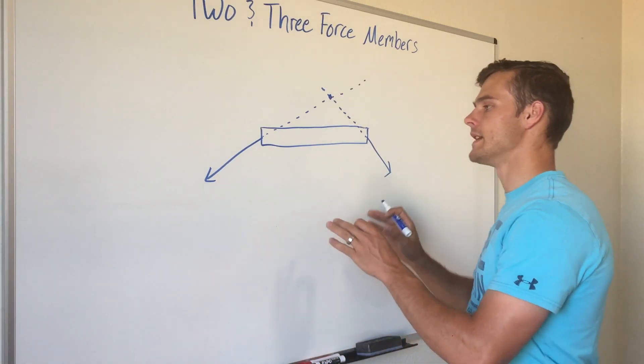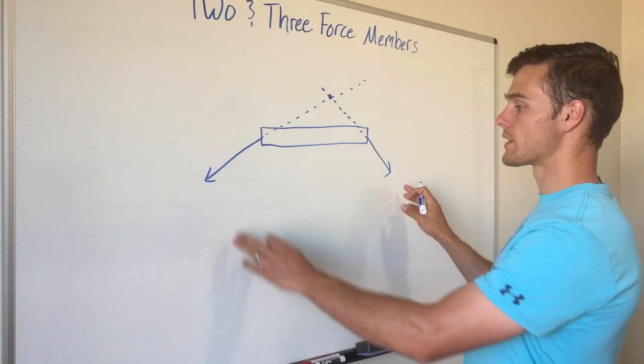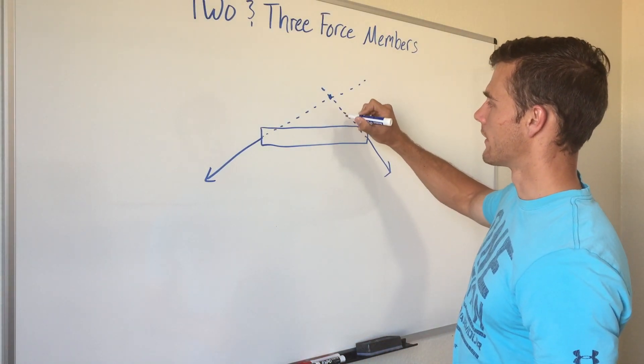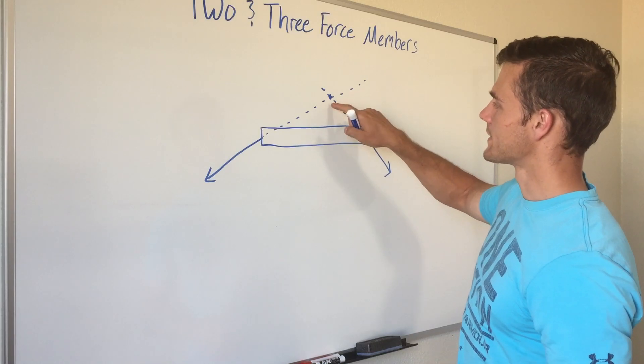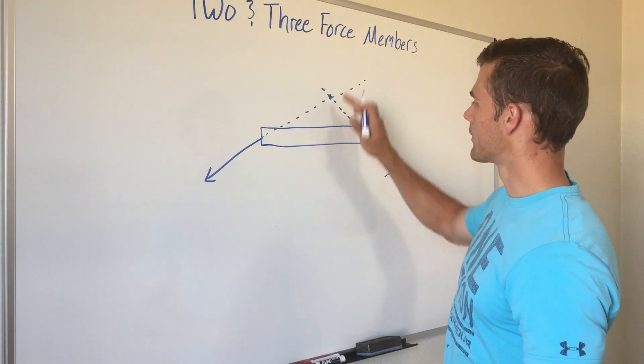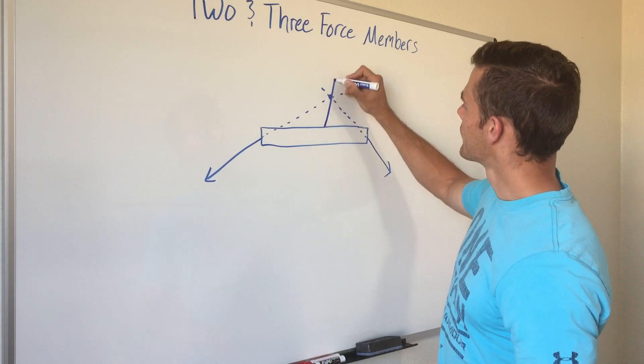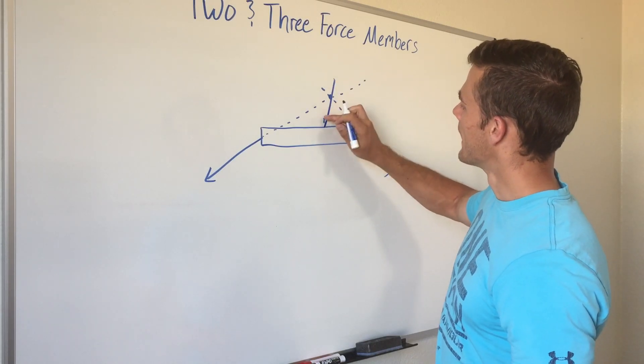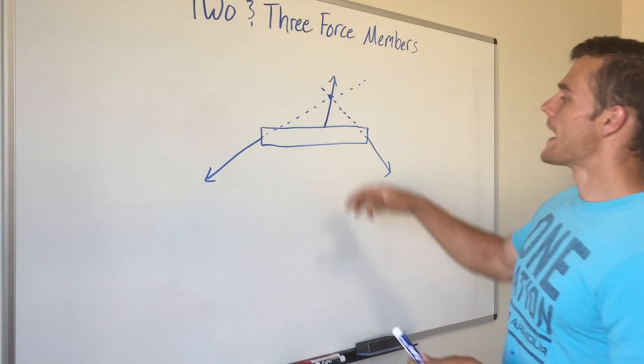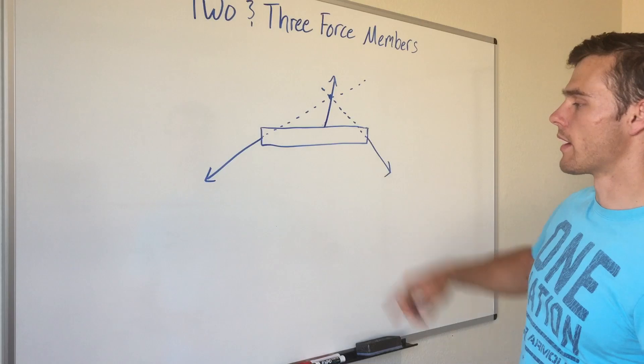Well, for it to be in equilibrium, the forces, for one, have to be the right magnitude, but it also has to be that the third point passes through this line, too. So whether that is going perpendicular to the beam or in another direction, and it's probably going to be going the opposite direction for it to be in equilibrium, but it has to be going through that point also.